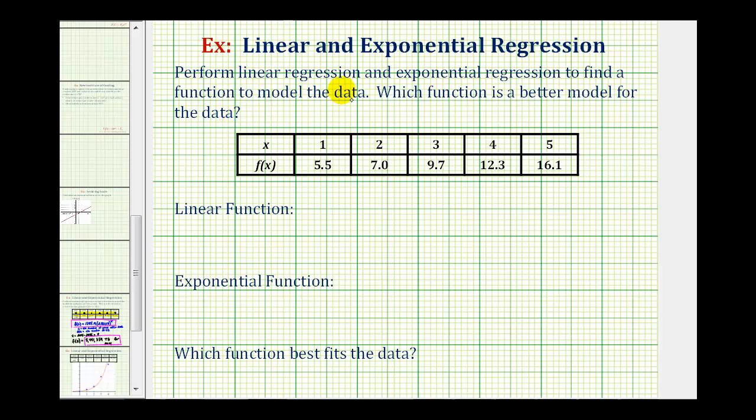We want to perform linear regression and exponential regression to find a function to model the data. Then we want to determine which function is a better model for the data. To determine which model is better, we'll perform regression on the graphing calculator and then compare the r-squared value, the coefficient of determination. Whichever function has an r-squared value closer to one will be the better model for the data.